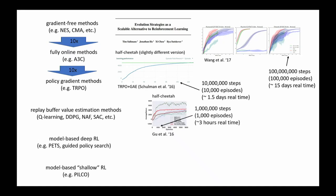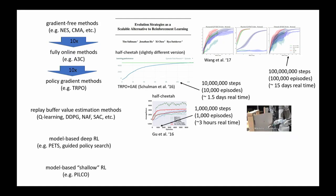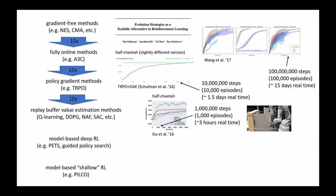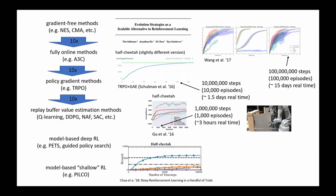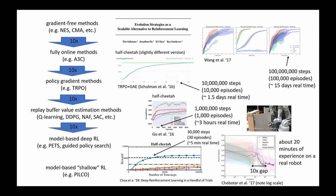For replay buffer methods, Gu et al. 2016 achieves about one million steps — roughly three hours of real time — and there's another paper by the same person showing real-world robotics learning in about three hours. For model-based RL, the PETS paper gets down to about five minutes of real time — again about a 10X step down. For shallow model-based methods like PILCO using Gaussian processes, very simple tasks can be learned in seconds, though Gaussian processes don't scale to larger problems.